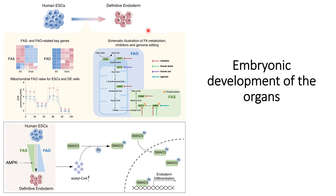From this, they find that it is fatty acid oxidation that helps in the differentiation of human embryonic stem cells toward the endoderm, which is one of the important initial steps toward germ layer development and organ formation. I hope you understand this basic differentiation phenomenon occurring in embryonic stem cells. If you need more detail about this research, you can go through the reference provided in the description. That's all for this video — thank you for your time.